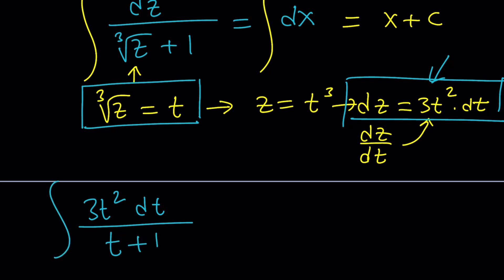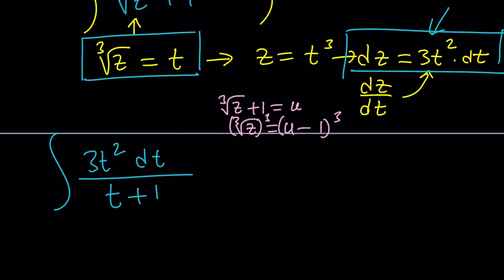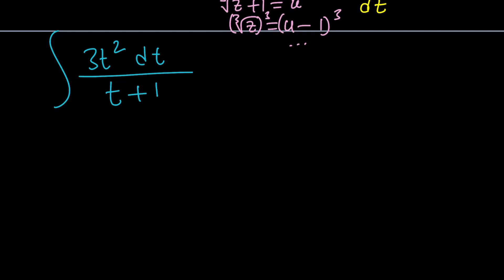Now, alternatively, if you replaced cube root of z plus 1 with something like u, then you would subtract 1 from both sides and then cube both sides. And that would bring in u minus 1 cubed, which is a little bit longer. But guess what? That's perfectly fine because the denominator is going to be simpler in that case. So definitely, you can go either route. That's fine, but I'm going to follow this if you forgive me because this has a really cool trick.